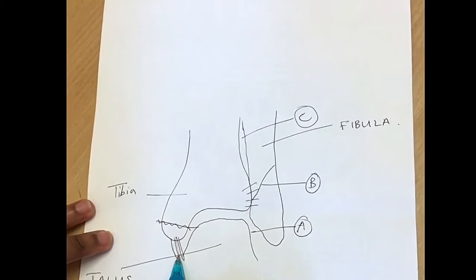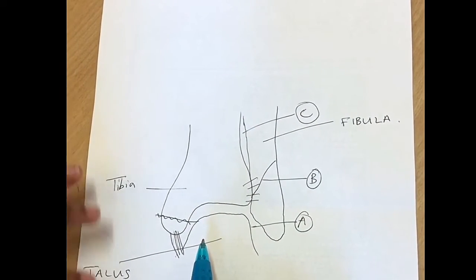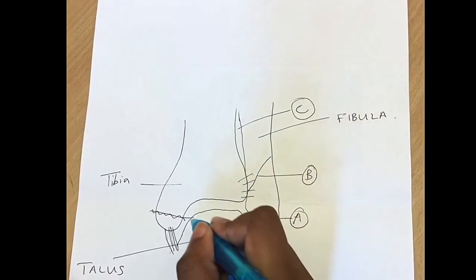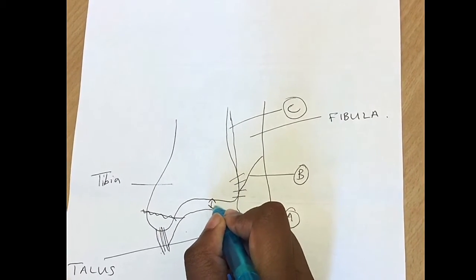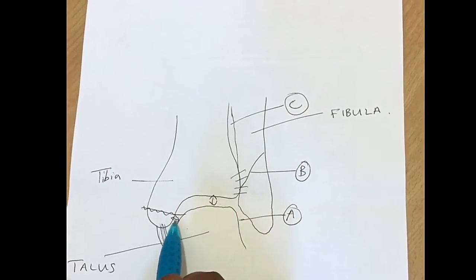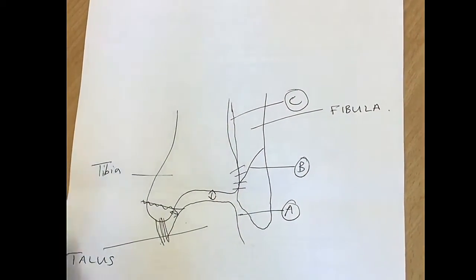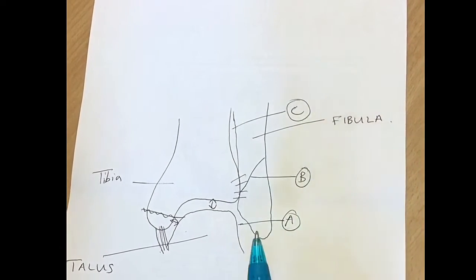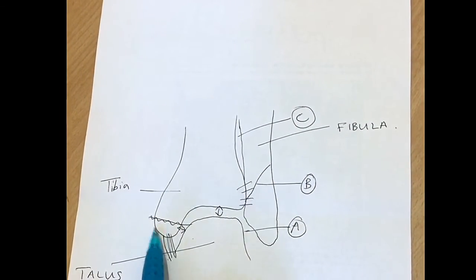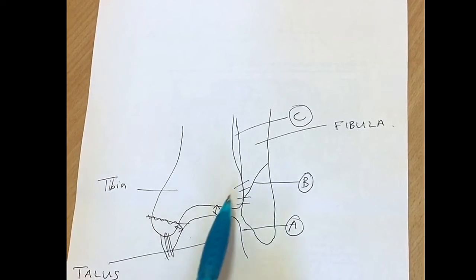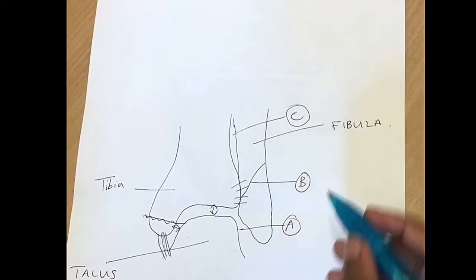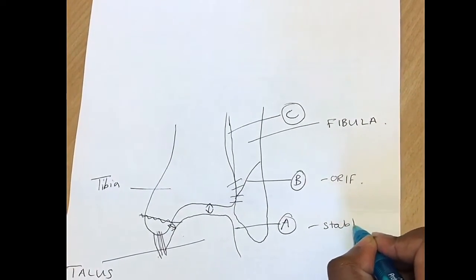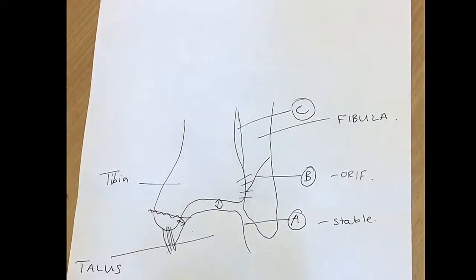The medial malleolus may be fractured, and the deltoid ligament may be torn, which is shown by widening of the space between the medial malleolus and the talar dome. This distance is usually equal to the distance on the other side — that is how you can see if there is any talar shift or not. The Weber B fracture has variable stability depending on the status of the medial structures — that is, the medial malleolus, the deltoid ligament, and the syndesmosis.